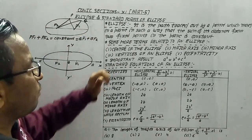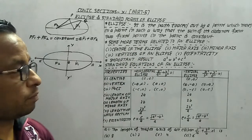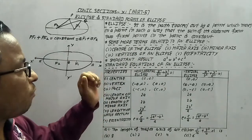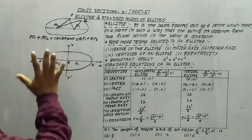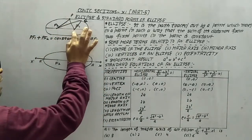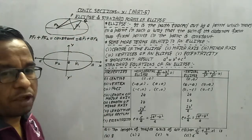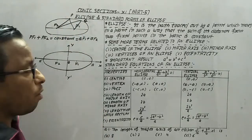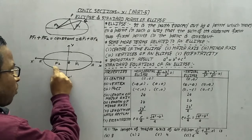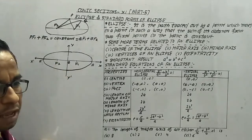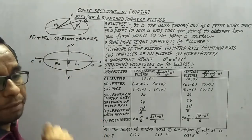Now let us look at some more terms related to an ellipse. The two fixed points are known as the foci of an ellipse. The midpoint of the foci is known as the center of the ellipse.